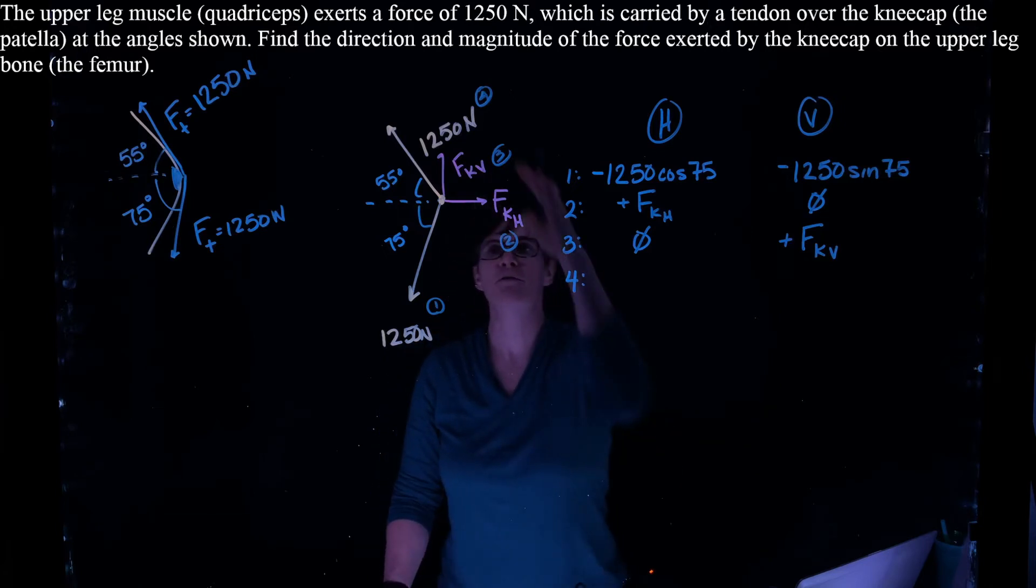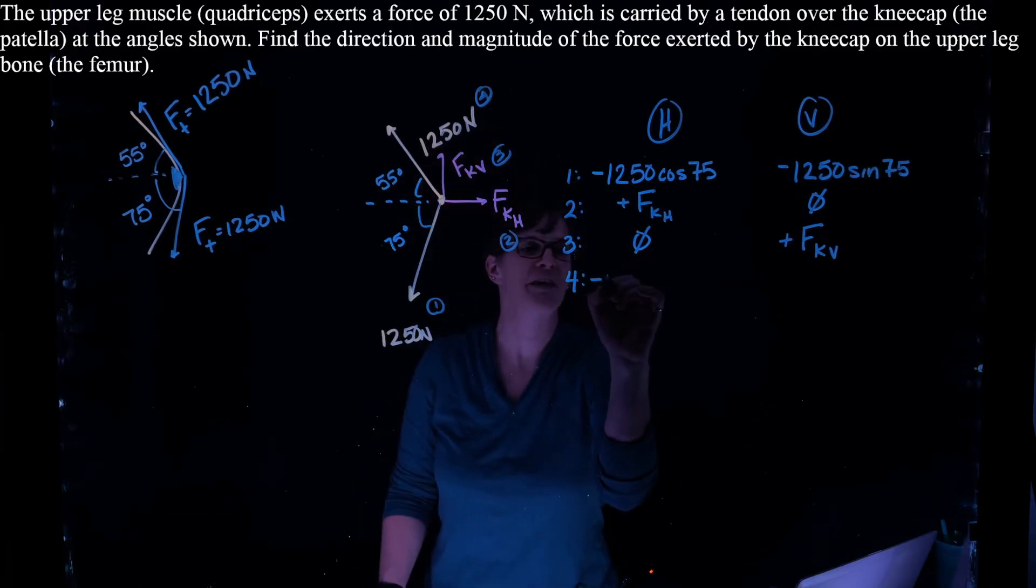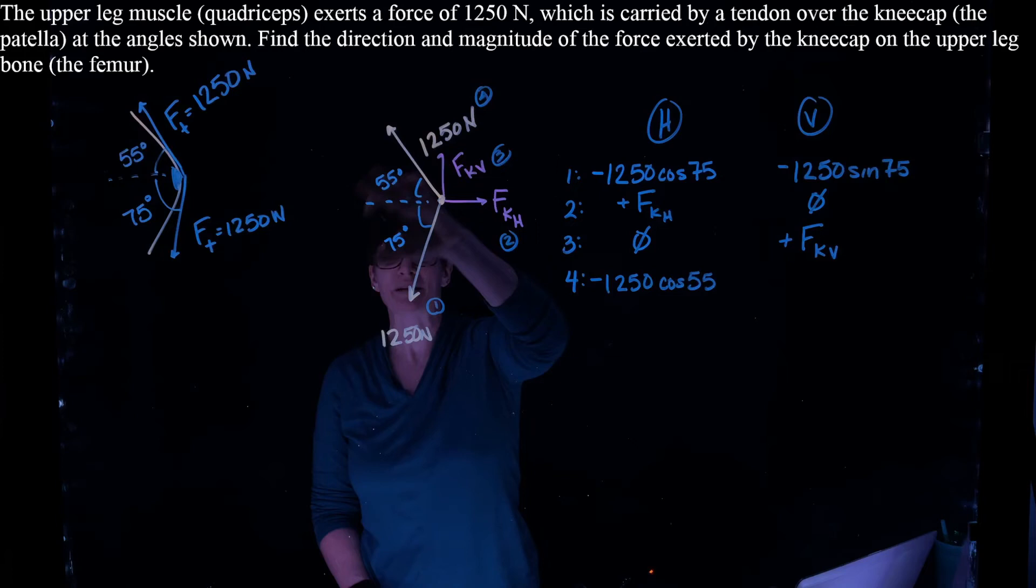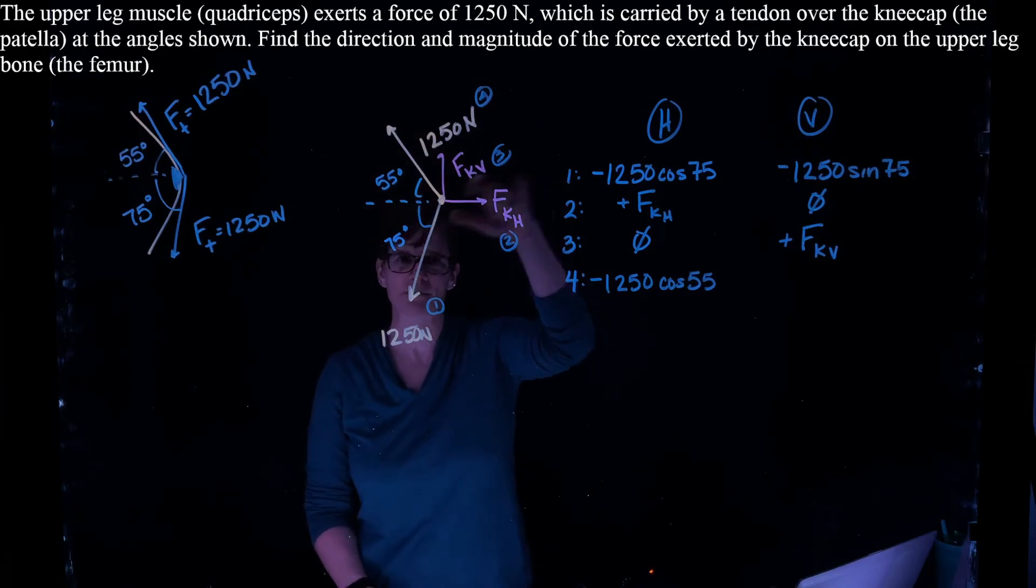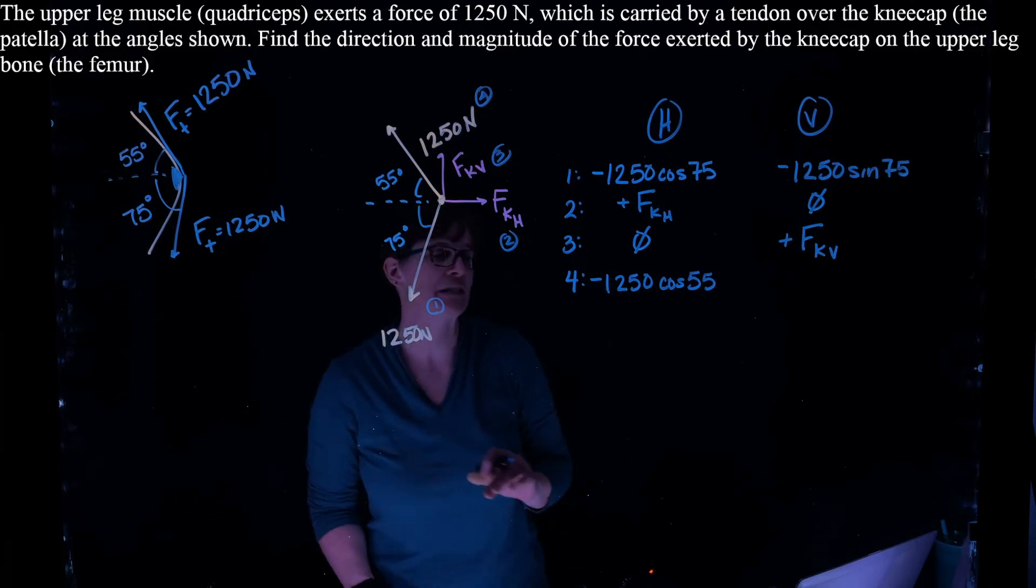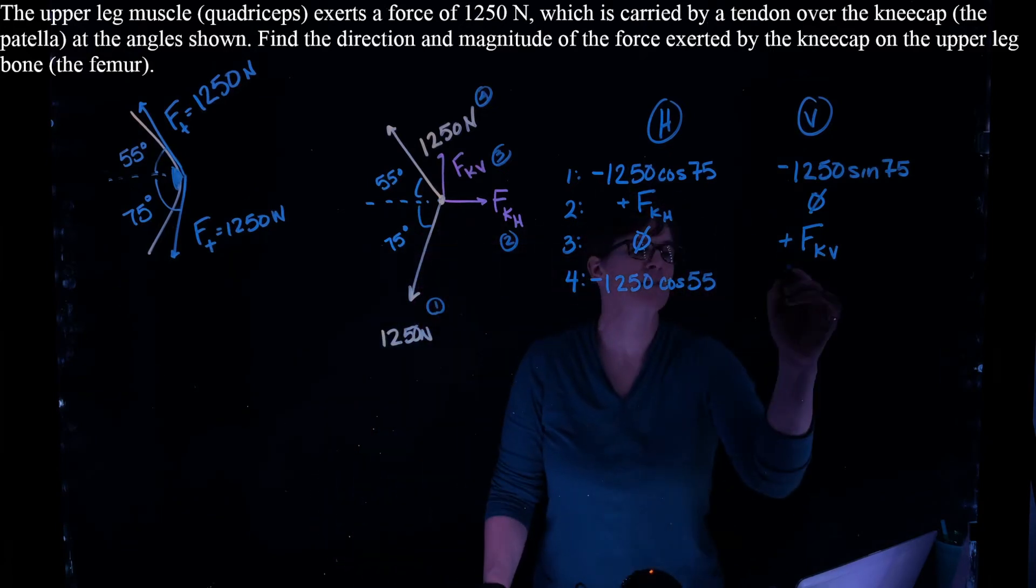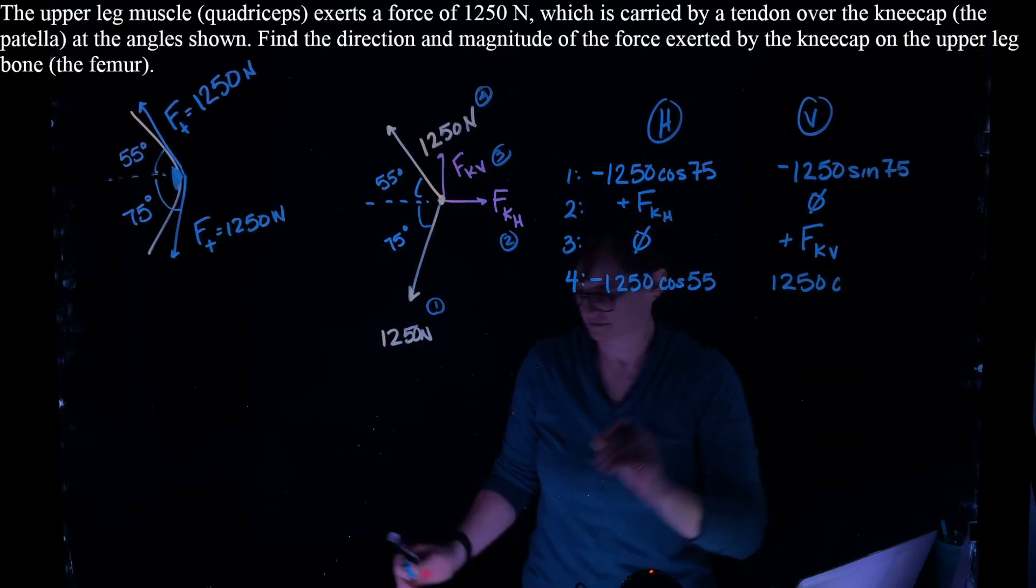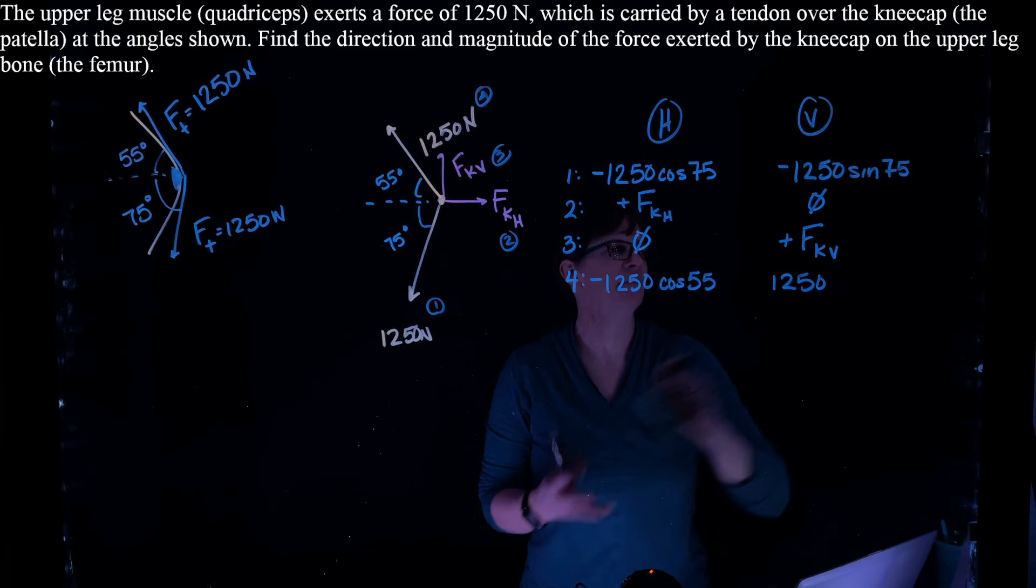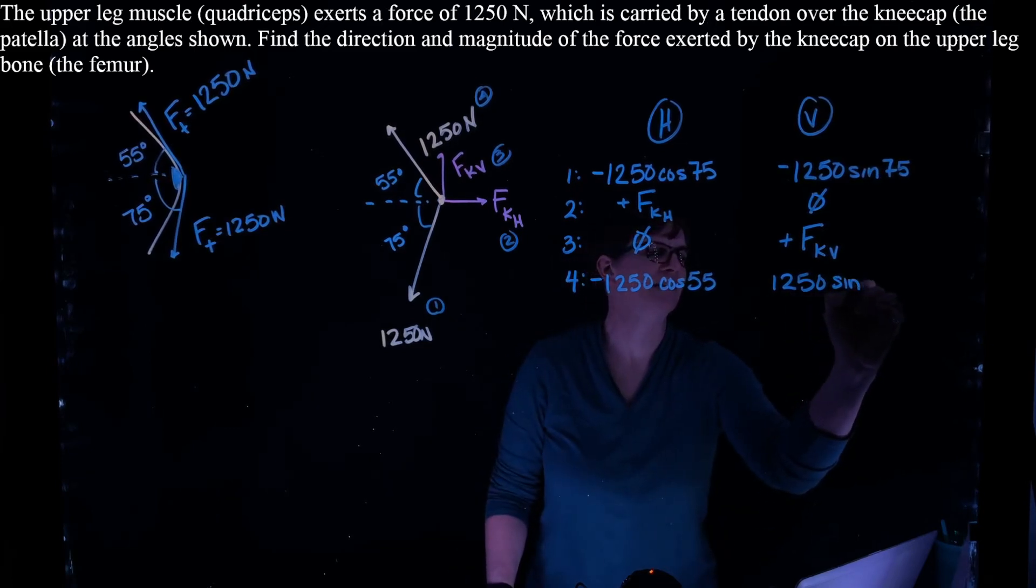And then force number 4, again, is to the left. So that'll be a minus 1250 times the cosine of 55. Again, since I'm not using the coordinate system of the positive x-axis to reference my angles, I have to pay attention to that direction. And it's also pointing up. So that'll be a positive 1250 times the sine of 55.